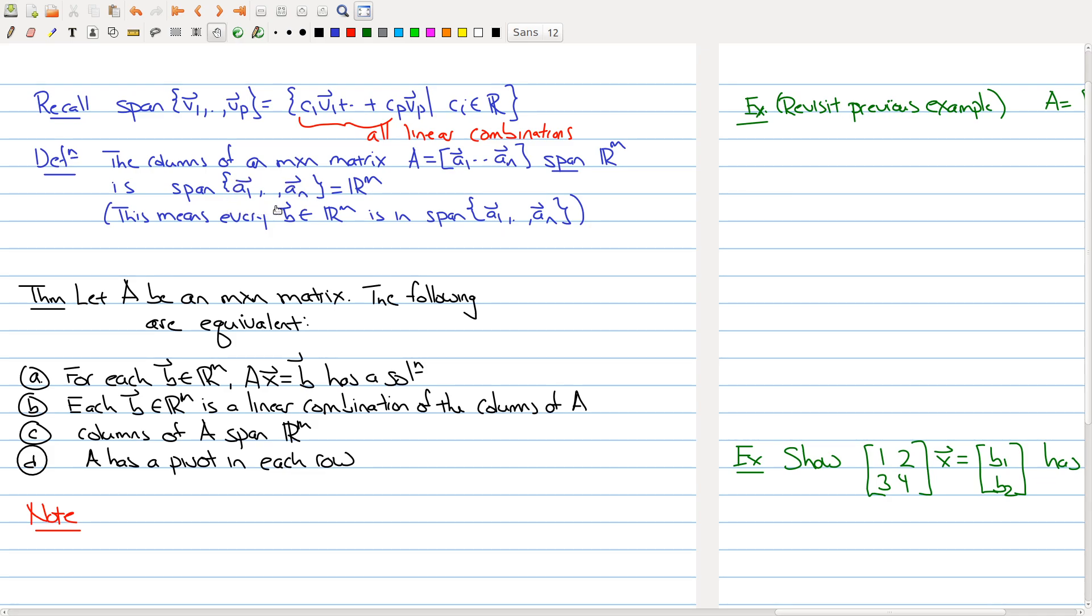So what that means is you do all the linear combinations of each of the columns. At the end of the day, you end up with R^m. So what this means is that every vector b in R^m is in the span of A1 through An. That means b can be written as a linear combination of these vectors.